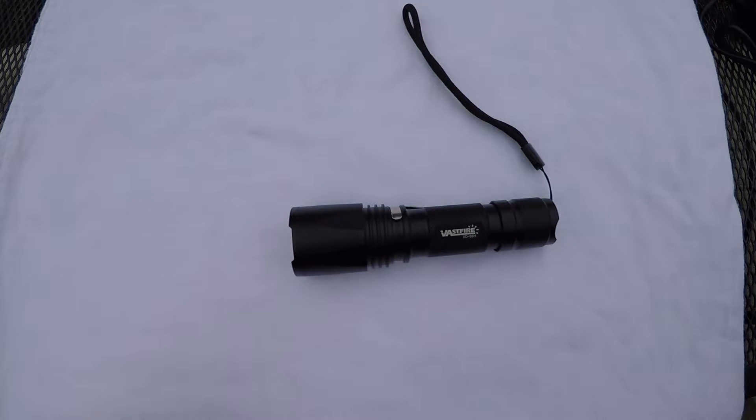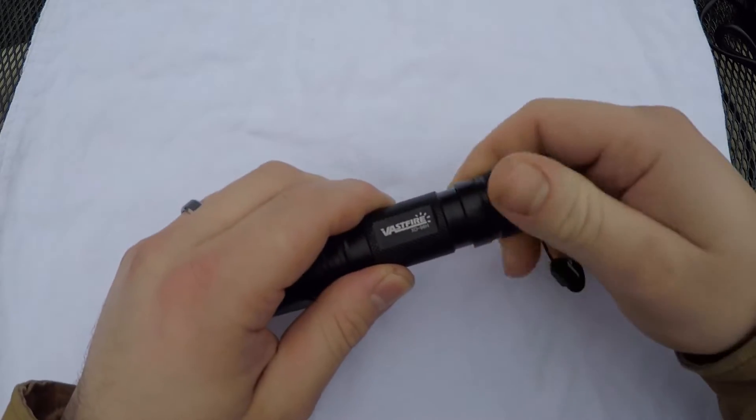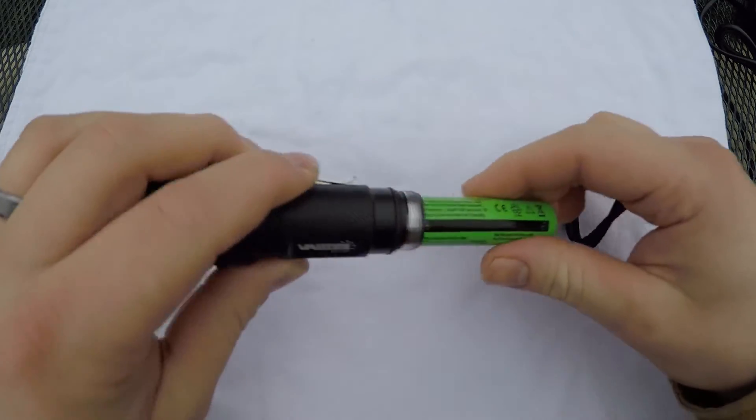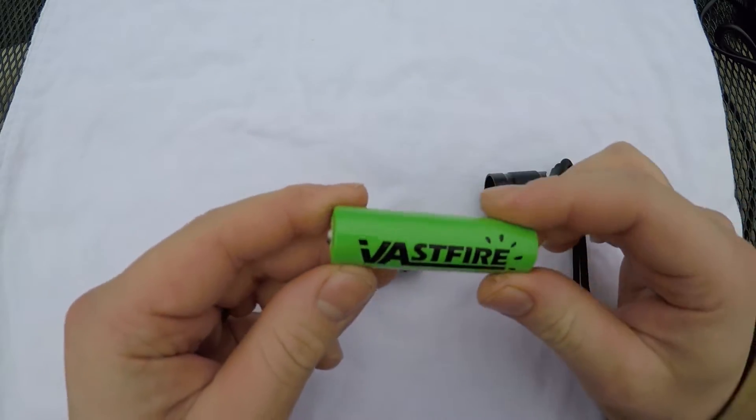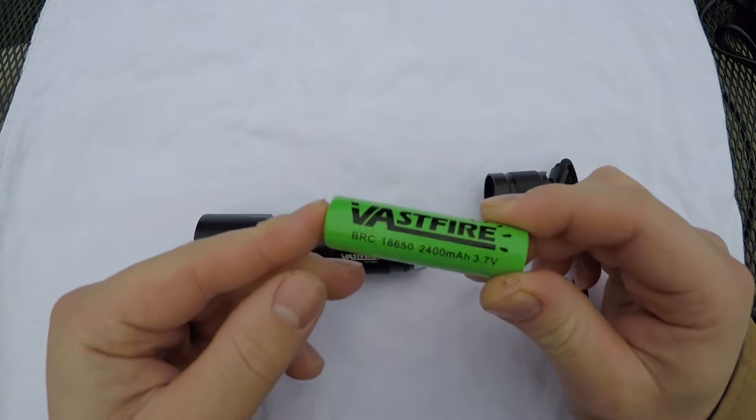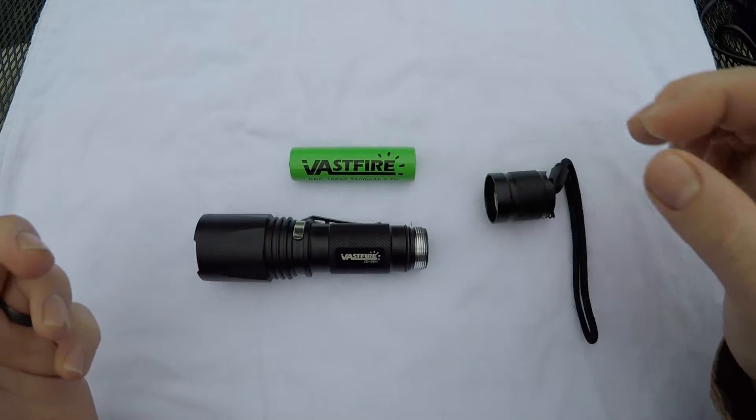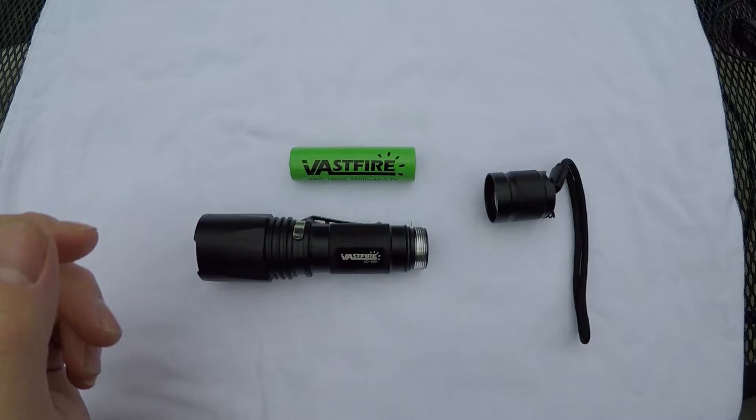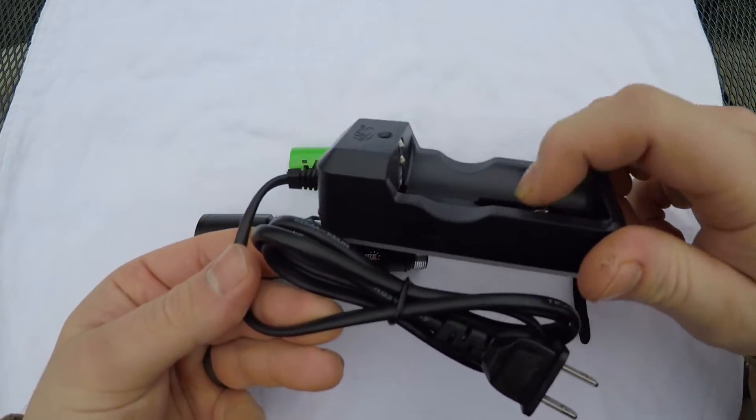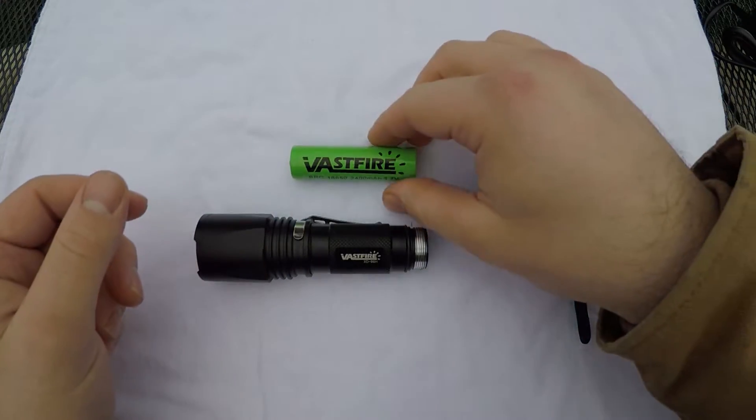It comes with one rechargeable battery. I have several other flashlights that come with two of these, so the fact they only include one is kind of a negative in my opinion. But I still like the rechargeable batteries. This is the recharger itself—very simple. Throw it in there, put it on there for an hour or two, and the battery is fully charged. It charges pretty quickly.